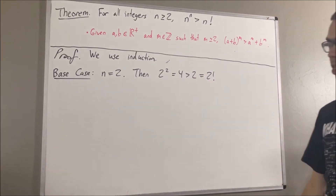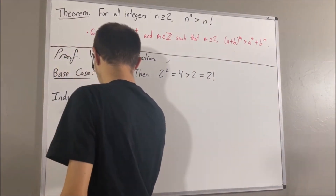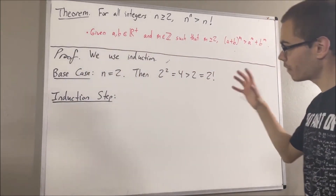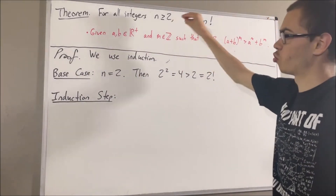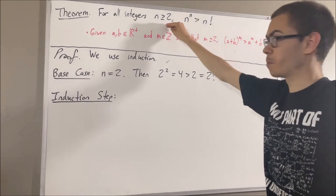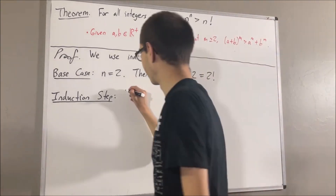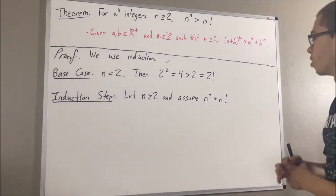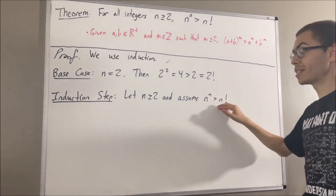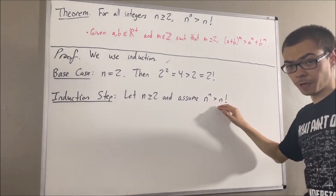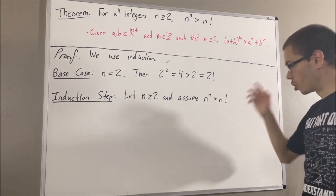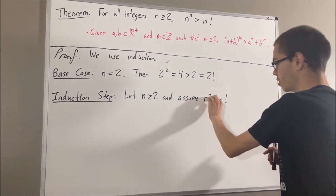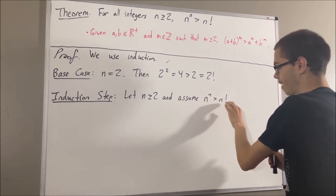Now let's move on to the induction step. We give ourselves an arbitrary integer n greater than or equal to 2 where the theorem is true. The goal now is to show that this is also true for n plus 1 — that is, n plus 1 to the power of n plus 1 is greater than n plus 1 factorial.